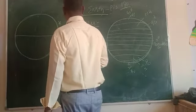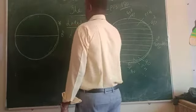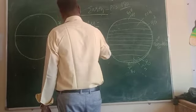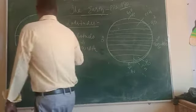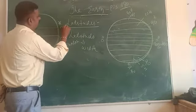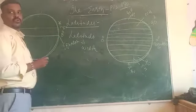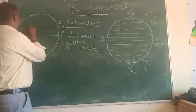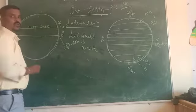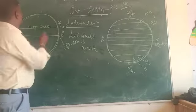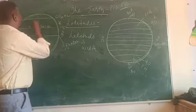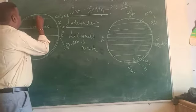The middle line of the globe is called zero degree latitude, or the equator. 23.5 degree north latitude is called the Tropic of Cancer. 66.5 degree north latitude is called the Arctic Circle.